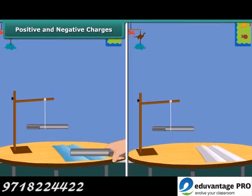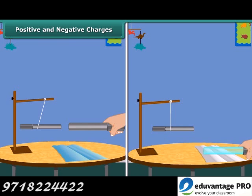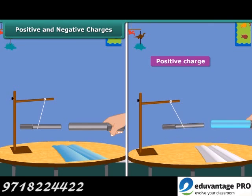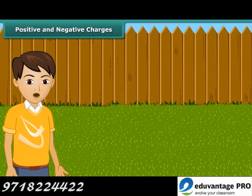The charges produced in the ebonite and the glass are different in nature. These two kinds of charges are called positive and negative charges. The positive charge is shown by the plus sign and the negative by the minus sign. Merely as a convention, charge on a glass rod rubbed with silk is taken as positive, and that of ebonite rod rubbed with woolen cloth is taken as negative. From the earlier activity we can conclude that like charges repel each other and unlike charges attract each other.